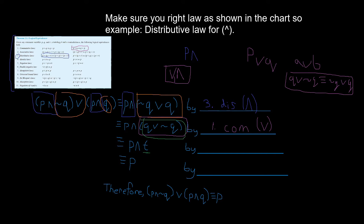Our next logical equivalence says p AND t, as following. What happened here? We're going to use the negation law — that's our negation law — and we're going to use the negation law for the OR. That gives us number five, the negation law for OR.